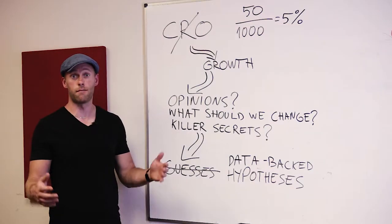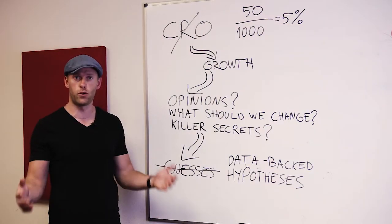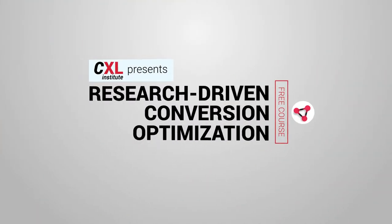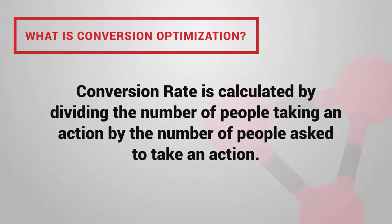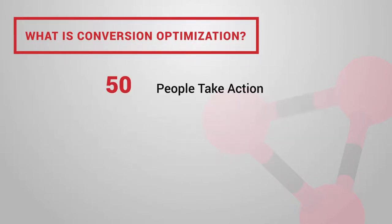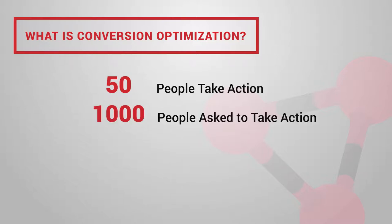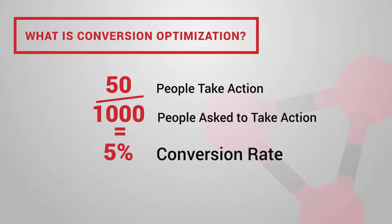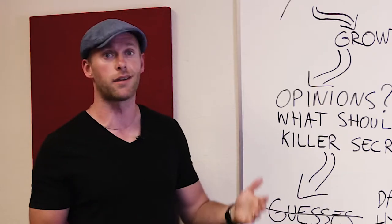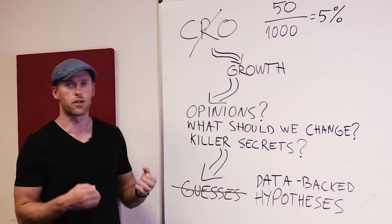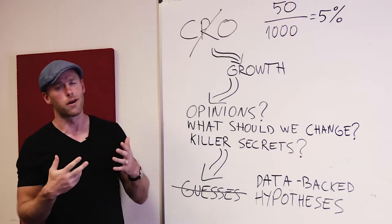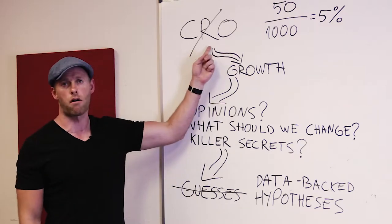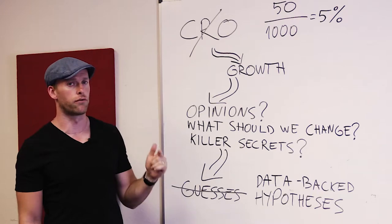Conversion rate optimization is a way to make more money. It's a mathematical formula: if 50 people buy your stuff but 1,000 came to your website, you divide the two and get a 5% conversion rate. To make more money, we need a higher conversion rate. They say CRO is all about increasing the rate to 6% or 7%, but I kind of disagree — I don't like the R in conversion rate optimization, because it's not really about the conversion rate.